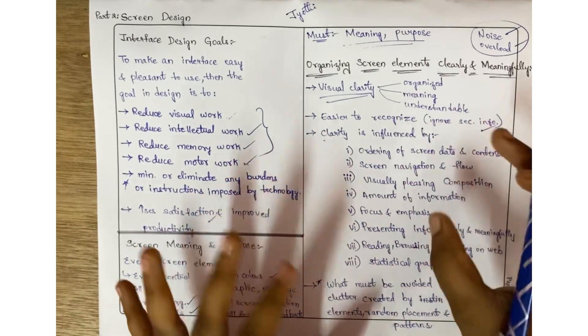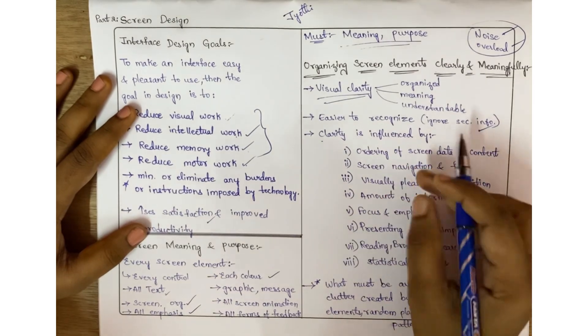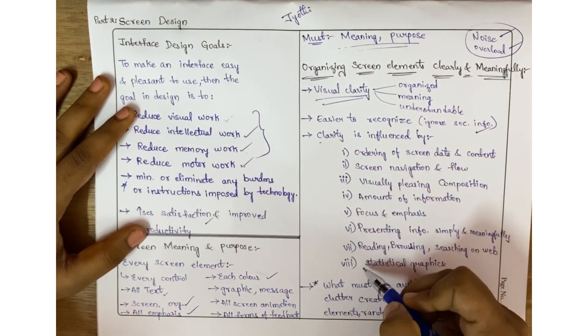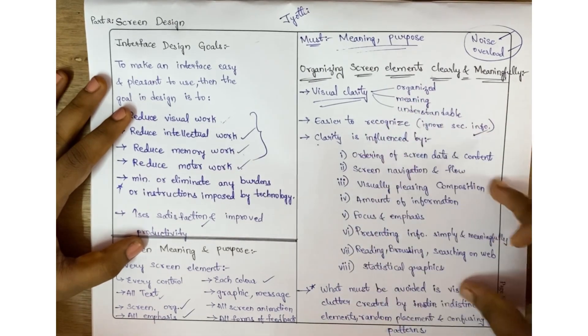Coming to the next point: clarity is influenced by certain parameters. We have eight parameters here. If we discuss in detail about each parameter, then the second unit is complete. The detailed explanation of all these eight parameters is given in the next video.